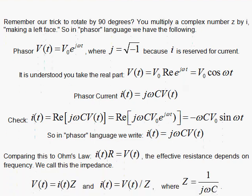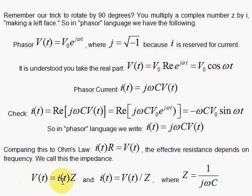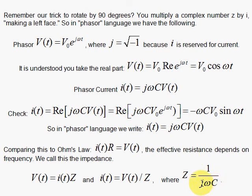Now we force a generalization of Ohm's Law. Ohm's Law says V equals IR, and the generalization replaces resistance with impedance Z. For the capacitor, dividing the phasor equation gives impedance Z equals 1 over (j·omega·C). It depends on frequency and contains the imaginary number. We'll use this powerful technique in the next section to analyze a low-pass filter with phasors.